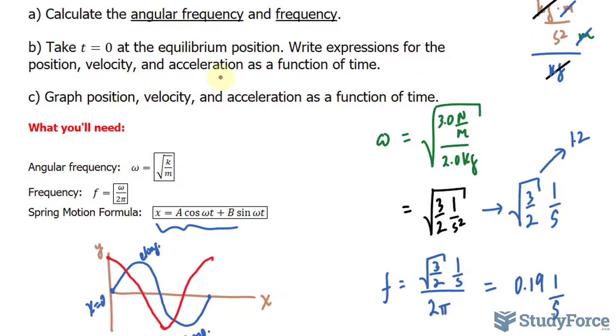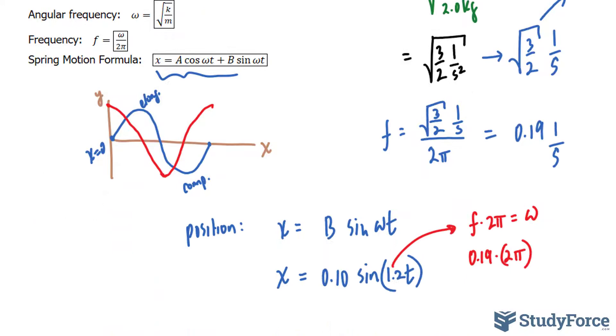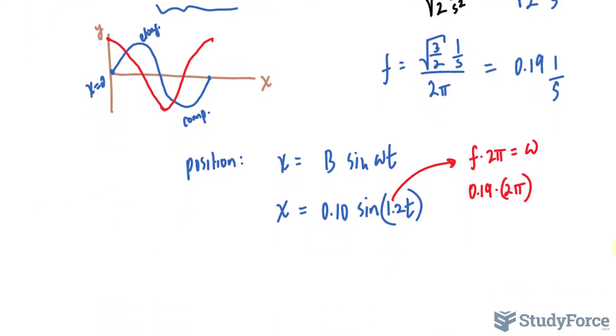Now we need to do this for velocity and acceleration. To do it for velocity, you need to take the derivative of this function. If you haven't learned about calculus, this is where it comes in handy. If we take the derivative, the derivative of the position function gives us the velocity of this spring-mass system in terms of t.